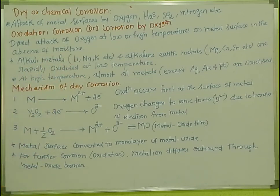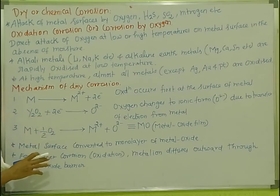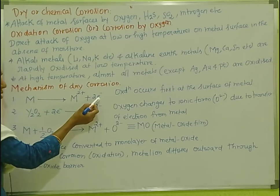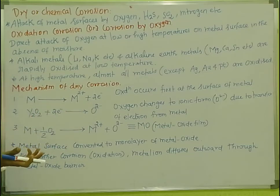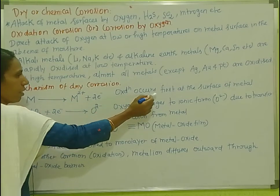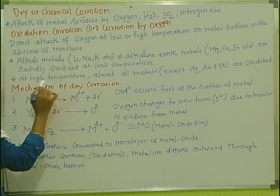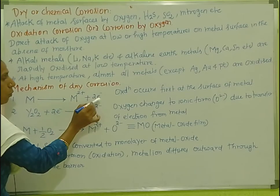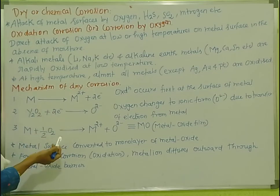We will see the mechanism of dry corrosion. The mechanism is very important. We will see the first three reactions. The first reaction is oxidation. Metal loses electrons — oxidation is the loss of electrons. The metal is oxidized. The metal ion is converted, releasing electrons from the surface of the metal.